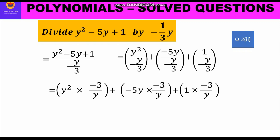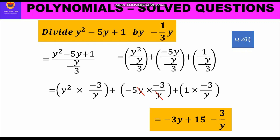So we write y square into (-3/y) plus (-5y) into (-3/y) plus 1 into (-3/y). For the first term, y square upon y gives y, and -3 stays, so we get -3y. For the second bracket, y and y cancel and -5 into -3 gives +15. For the third bracket, 1 into -3/y gives -3/y. So our answer is -3y + 15 - 3/y.